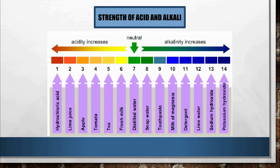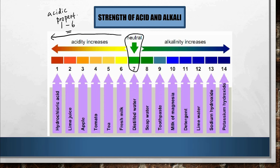Regarding the strength of acid and alkali: neutral substances have a pH of 7 — for example, distilled water — meaning they have no acidic or alkaline properties. From pH 1 to 6, going below neutral, substances are acidic. From pH 8 to 14, going above neutral, substances are alkaline.